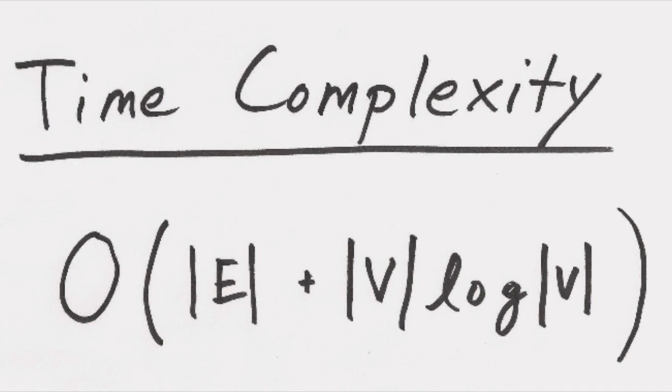The time complexity of Dijkstra's is O(E + V log V) if a Fibonacci heap is used. Put simply, this is a result of creating the queue of distance values and looping through the edges of each node.